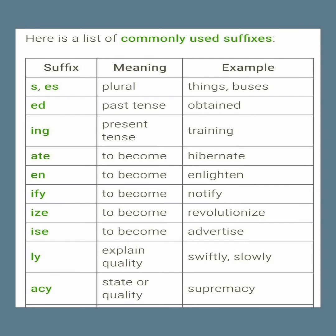Here is a list of commonly used suffixes. -S or -es means plural; examples: things, buses. -Ed means past tense; example: obtained. -Ing means present tense; example: training. -Ate means 'to become'; example: hibernate. -En means 'to become'; example: enlighten. -Ify means 'to become'; example: notify. -Ize means 'to become'; example: revolutionize.